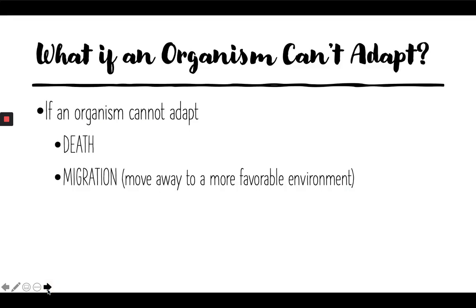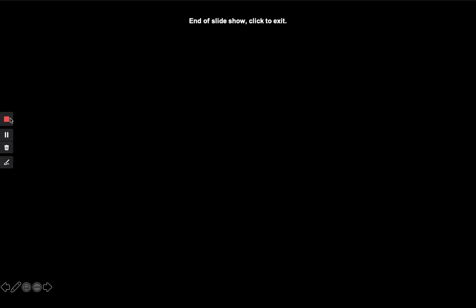What if organisms can't adapt? If a change happens in an environment and an organism cannot adapt either behaviorally or structurally to survive that change, two things generally happen: it can either die out in that area, or it can migrate — move away to a more favorable environment. That's all we have to learn today about organism adaptations. I hope this helps you better understand how living things are always changing to survive, get food, and reproduce in their changing environments.